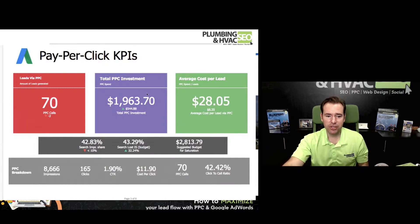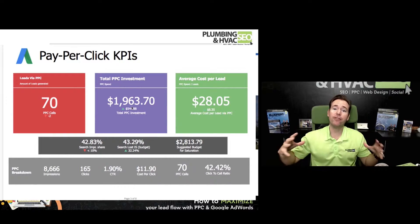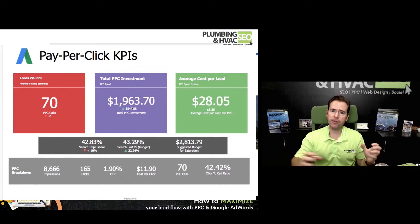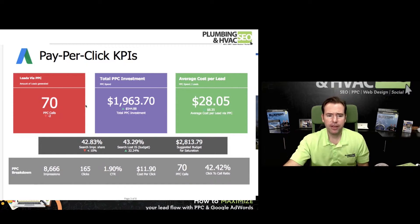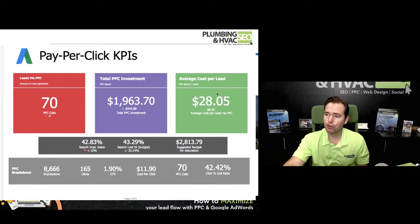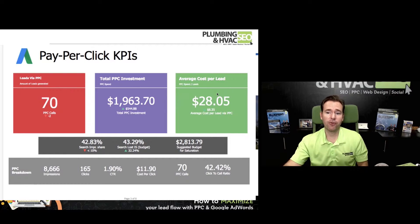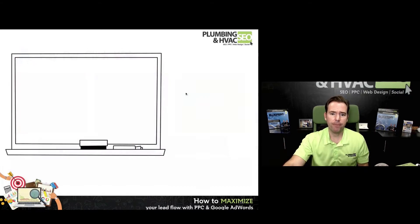Using that client as the example, pay-per-click spend was specifically about $2,000 a month — not a massive budget, a good manageable budget. That generated 70 leads — calls and web forms — at an average cost per lead of $28 per lead. Right in the sweet spot where we like to see our plumbing leads to generate a great return on investment.